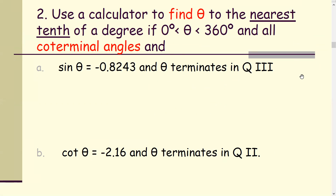In this part, we're going to use the calculator to find an angle theta to the nearest tenth of a degree. Part 3: if angle theta is between 0 degrees and 360 degrees, and all co-terminal angles. In Part A, the sine of angle theta is negative 0.8243 and the angle theta terminates in quadrant 3. First, find the reference angle theta-hat. Ignore the negative sign.